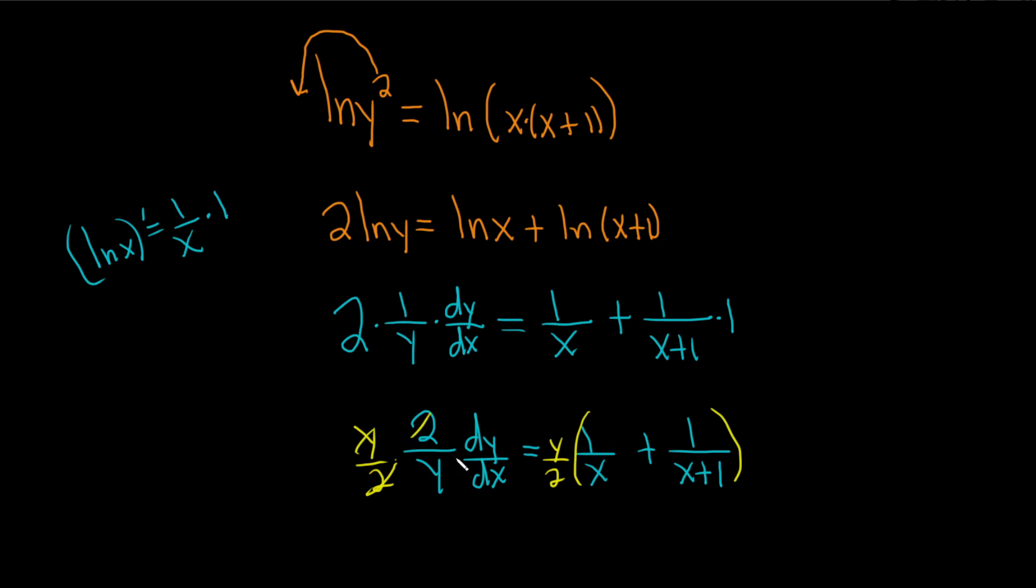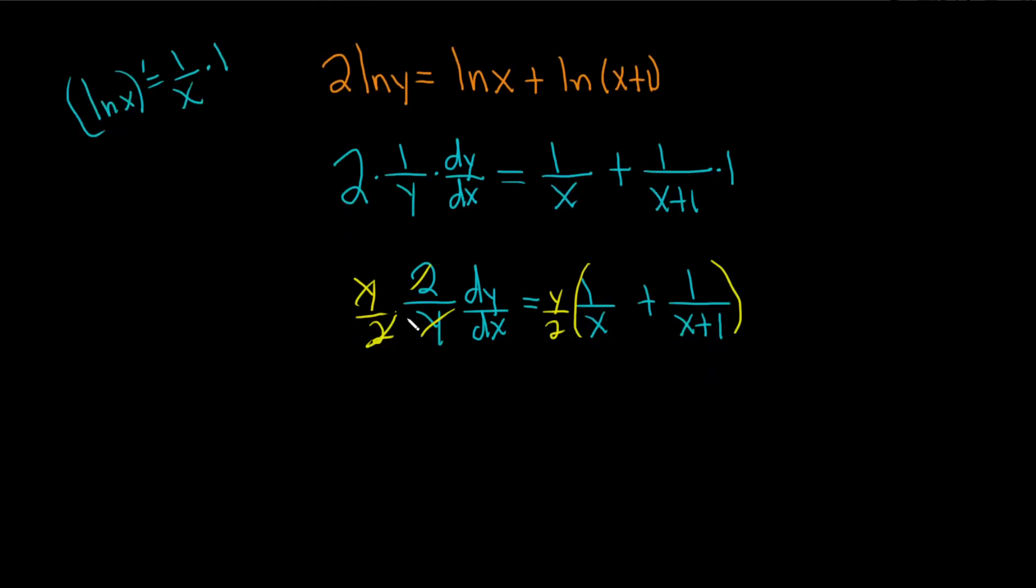These cancel. So we get dy dx is equal to, and I'm just going to leave it like this, 1 half y, I'm going to write it like that, and then 1 over x, plus 1 over x, plus 1. And that would be the final answer.